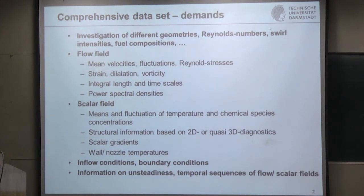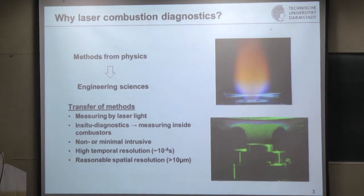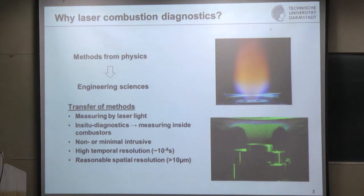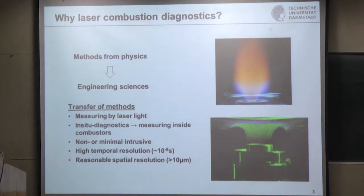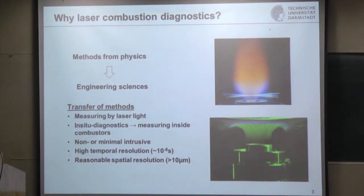Unsteadiness is something that is becoming more and more important, especially the closer you operate the flame at its stability limits. You need certain diagnostics that allow you to temporally resolve what's going on. All of what we are using comes from physics or physical chemistry — these methods were developed or explored for very different reasons. For example, spectroscopy originally comes from the desire to measure distances in molecules. We have transferred this into engineering science because measuring with laser light means you can directly measure in situ, which is much better than an extractive measurement.